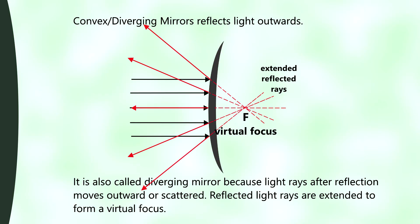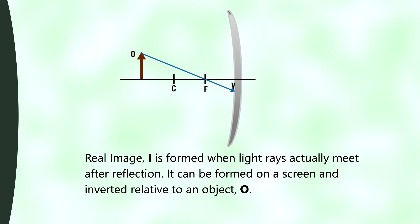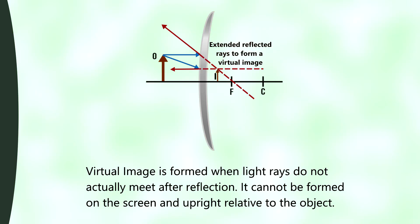Reflected light rays in a convex mirror are extended to form a virtual focus; therefore, it cannot be used to focus light rays. There are two types of images formed by curved mirrors. One is a real image — formed when light rays actually meet after reflection; it can be formed on a screen and is inverted relative to the object. A virtual image is formed when light rays do not actually meet after reflection. We must extend the two reflected rays to locate the image. The intersection of these extended rays is where the image forms, and it cannot be formed on a screen and is upright relative to the object.